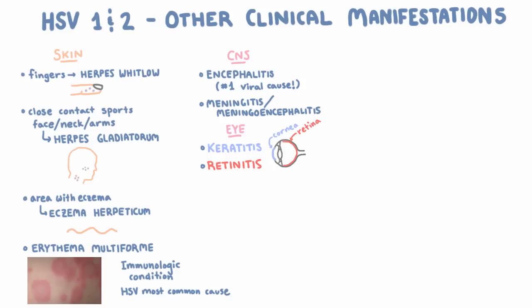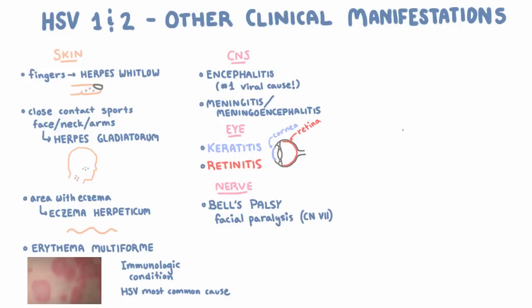Finally, another extension of the CNS: HSV can also cause Bell's palsy, which is an acute unilateral facial paralysis caused by interference with cranial nerve 7. It's often temporary. Many things can cause it, but HSV is probably the most common.